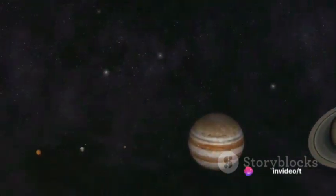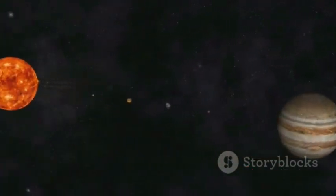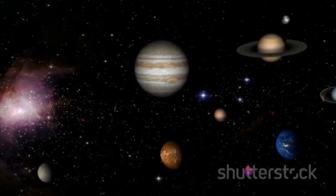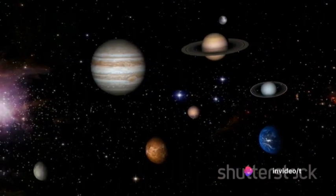Our solar system, a tiny speck in the cosmic canvas, is indeed in constant motion. Picture the Sun as a grand conductor, orchestrating the movements of the planets, asteroids, comets and other celestial bodies.